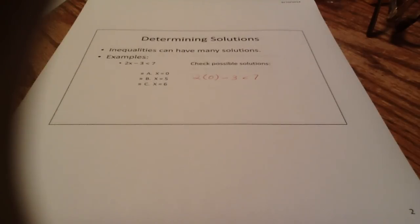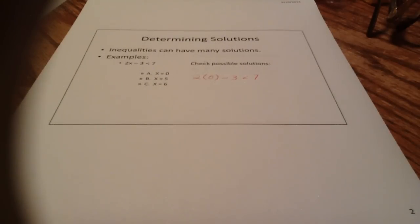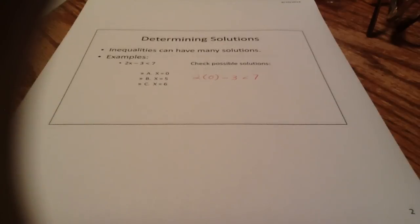We're going to check possible solutions. There are three solutions here: x equals 0, x equals 5, and x equals 6. The way that we do that is we plug in each possible solution for x, simplify, and see if it makes the inequality true.